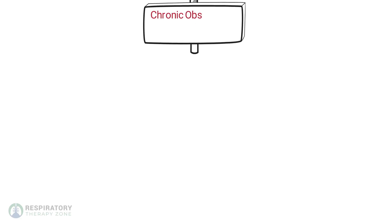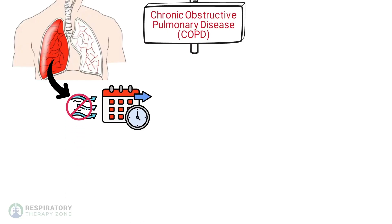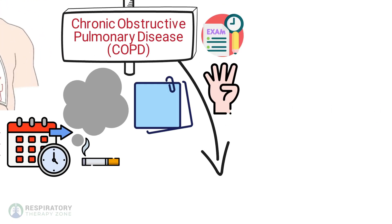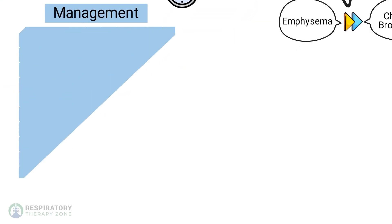COPD is a chronic inflammatory lung disease that causes obstructed airflow from the lungs. It's primarily caused by long-term exposure to irritating gases or particulate matter, most often from cigarette smoke. The two types of COPD are emphysema and chronic bronchitis, which we'll talk more about in the next lesson. The management of COPD involves the following.